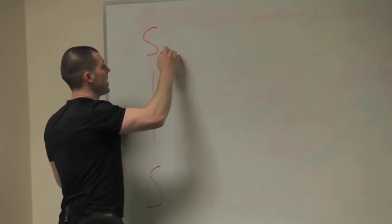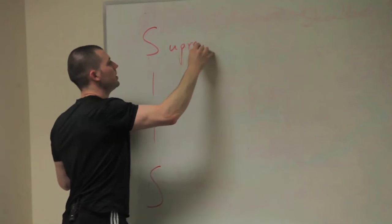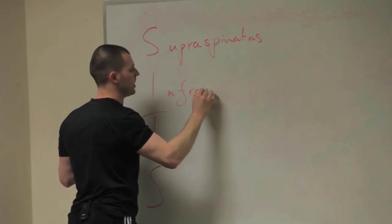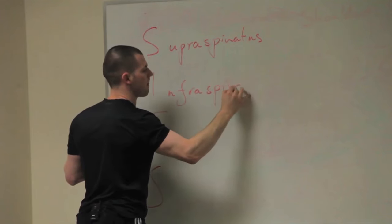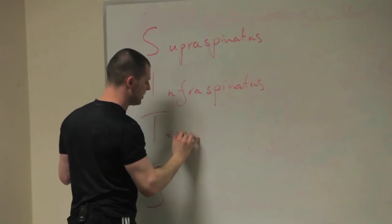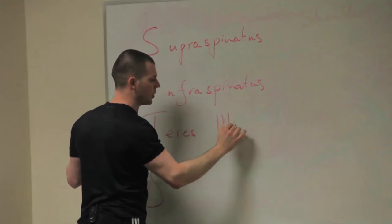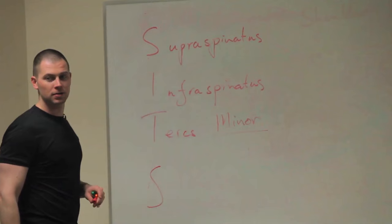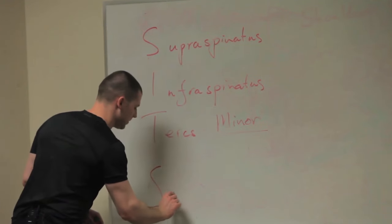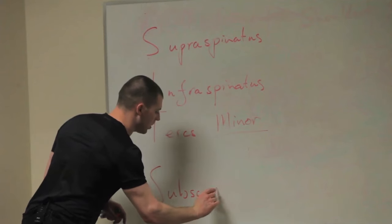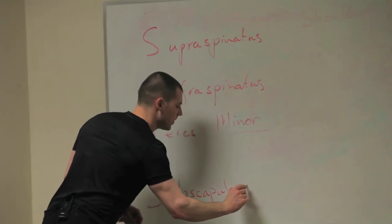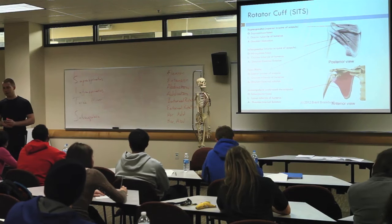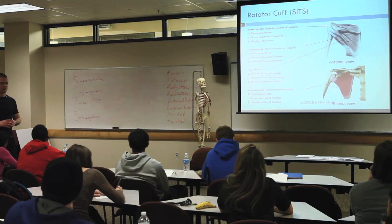First thing you've got to remember, unfortunately, is the names: supraspinatus, infraspinatus, teres minor - make sure you know teres minor - and subscapularis. I remember the first time I learned these muscles, the names kind of freaked me out. Supraspinatus - sounds like a dinosaur.